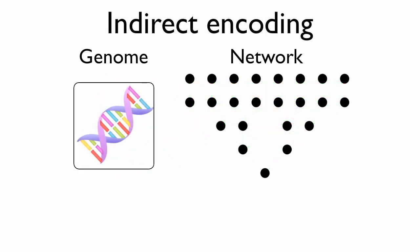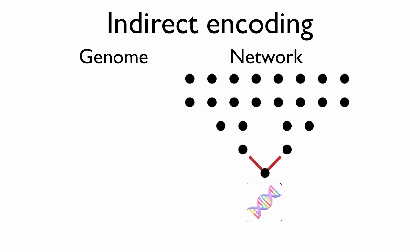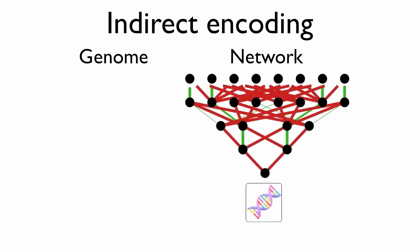In an indirect encoding, the genome instead forms the basis of a developmental process, allowing for information to be reused, resulting in more regular networks.